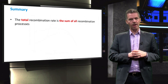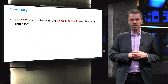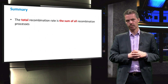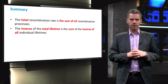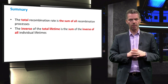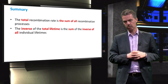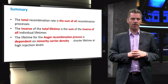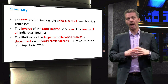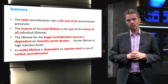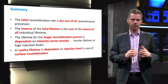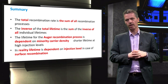In summary, we have seen that the total recombination rate can be described as the sum of the recombination rates of all recombination mechanisms. As a result, the inverse of the total lifetime is therefore equal to the sum of the inverses of lifetimes of the individual recombination mechanisms. We found that the lifetime is dependent on the injection level for the Auger recombination process only. However, in reality a dependence of the lifetime on the injection level has also been observed when the surface recombination varies with the injection level.